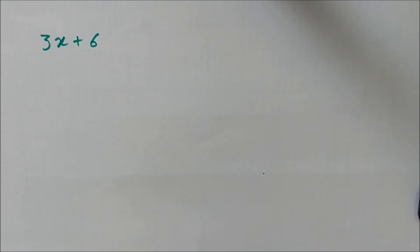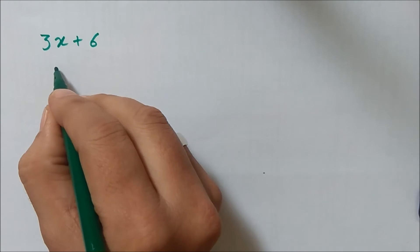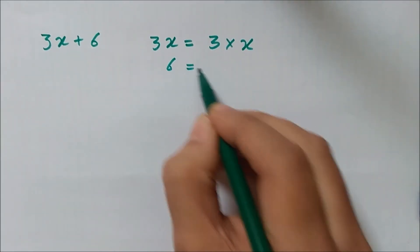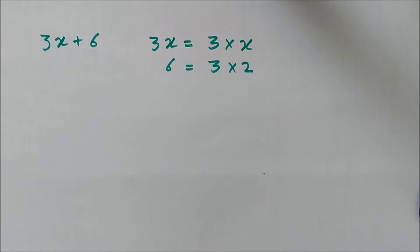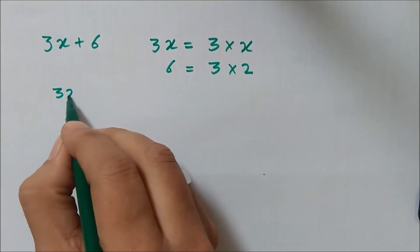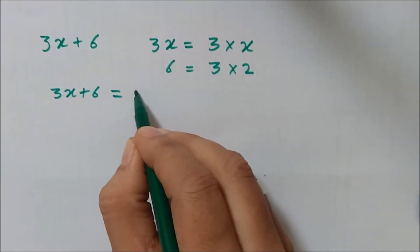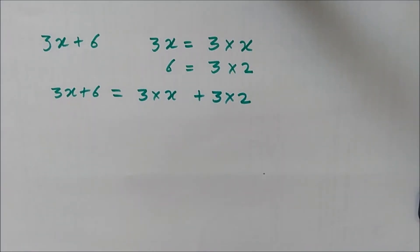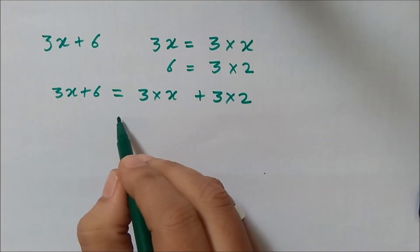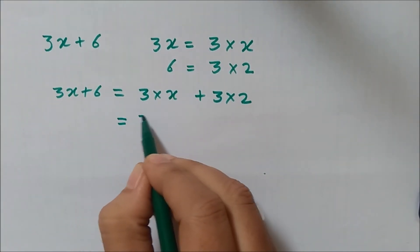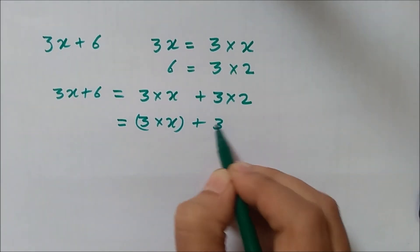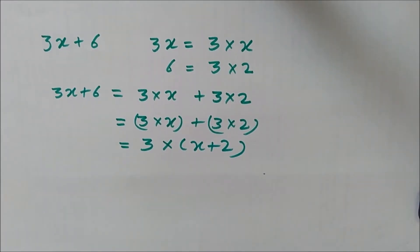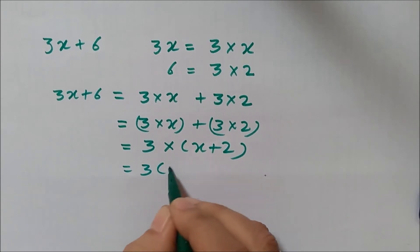We shall write each term in the irreducible factor form. The first term is 3x, which can be written as 3 into x. The next term is 6, which can be written as 3 into 2. So the total expression 3x plus 6 equals 3 into x plus 3 into 2. Now using the distributive law of multiplication and addition, we can write this as 3 into x plus 2.